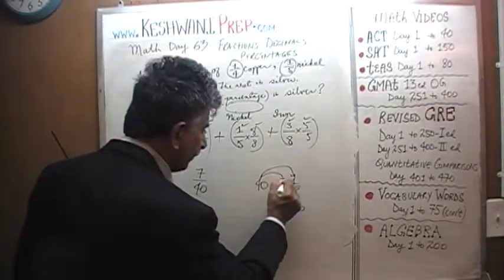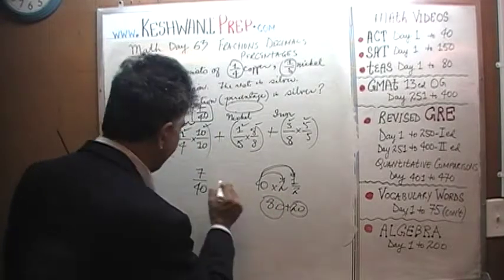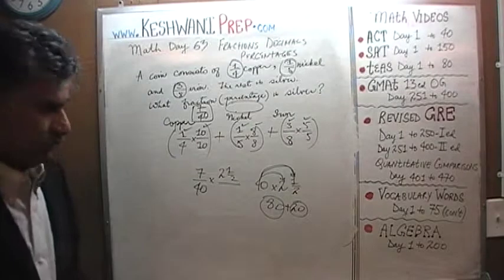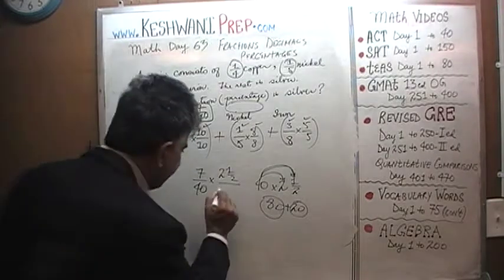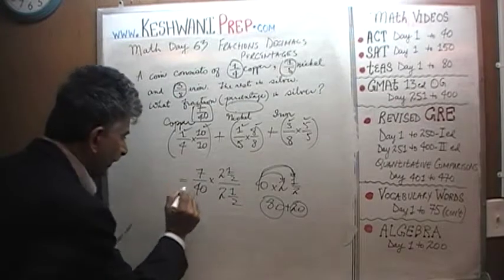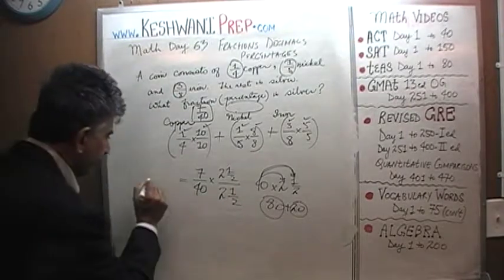40 times 2 is 80 and half of 40 is 20, which means 40 times 2.5 should do the job. We can multiply top and bottom by 2.5, and at the bottom we'll end up with 40 times 2.5, which is exactly 100.